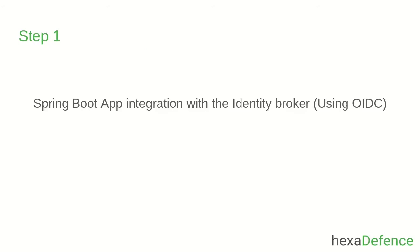Step number one is Spring Boot app integration with the identity broker. I have explained this integration in one of my previous videos and included the link in the description area. If you want to know that in detail, you can watch that video. Now I will show you the configurations of that setup — first the client configurations, then the Spring Boot application configuration.